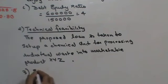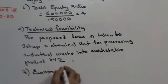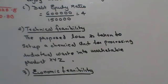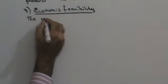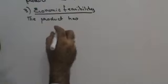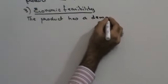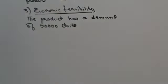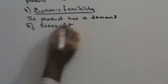Economic feasibility: The product XYZ has a demand of 50,000 litres, which means the product is definitely going to sell because there is a huge demand for it in the market.